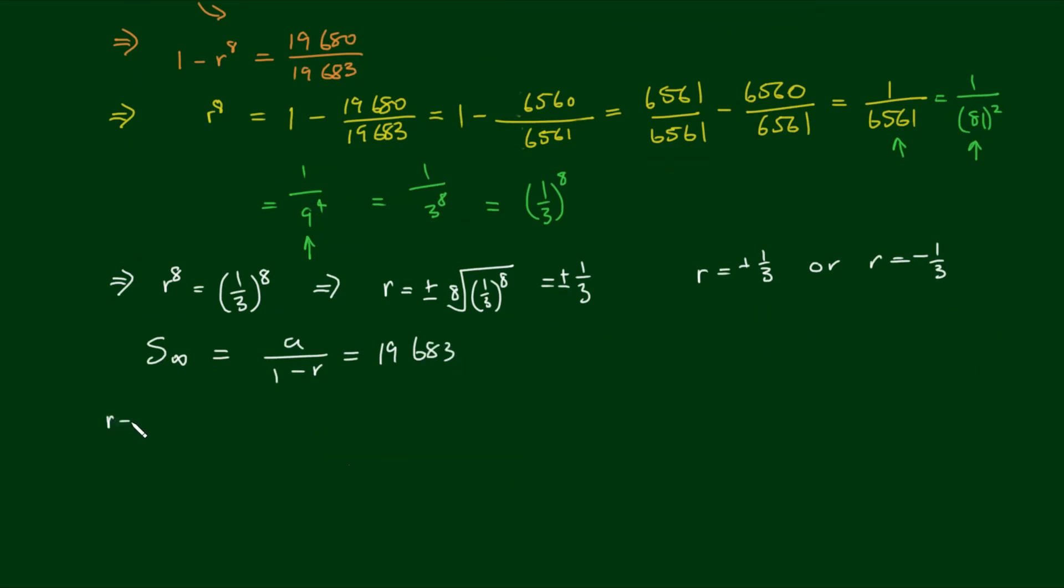So if we use r equals positive 1 third, the sum to infinity equals a on 1 minus 1 third, which equals a on 2 thirds, which equals 19,683.